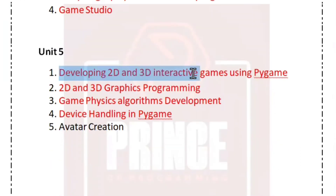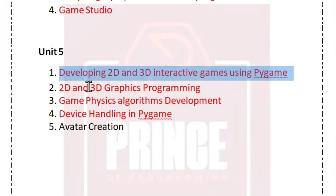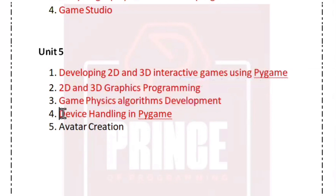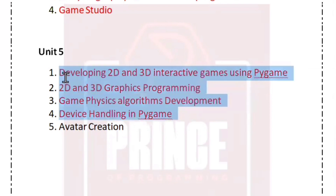Unit 5 covers Developing 2D and 3D Interactive Games Using PyGame. Topics include 2D and 3D Graphics Programming, Game Physics Algorithm Development, and Device Handling in PyGame.